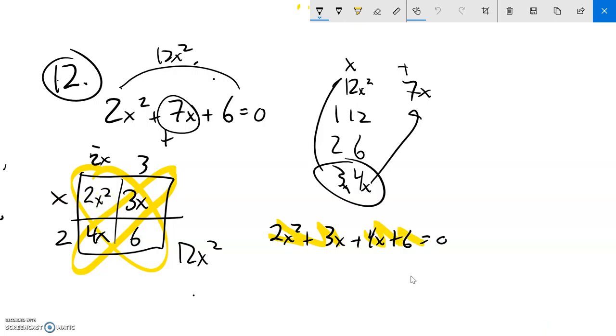So I could take out an x from here, leaving me a 2x plus 3. And I can take out a 2 from here. And notice if I take out a 2, that leaves me a 2x here and a 3 here. So I have a 2x plus 3.